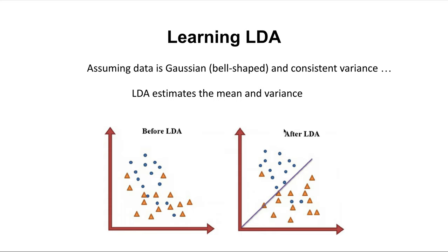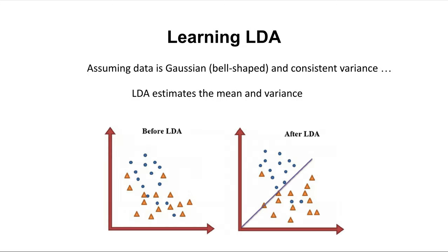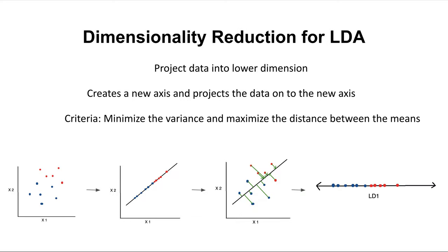After satisfying those two assumptions, we can estimate the mean and variance, and then draw a dividing line — similar to the support vector machine hyperplane. After drawing the line, we're basically projecting our axes or features from a higher dimensional space to a lower dimensional space. A good projection is when we're separating the classes well. We want good separation of the classes after estimating the mean and variance. That's linear discriminant analysis.